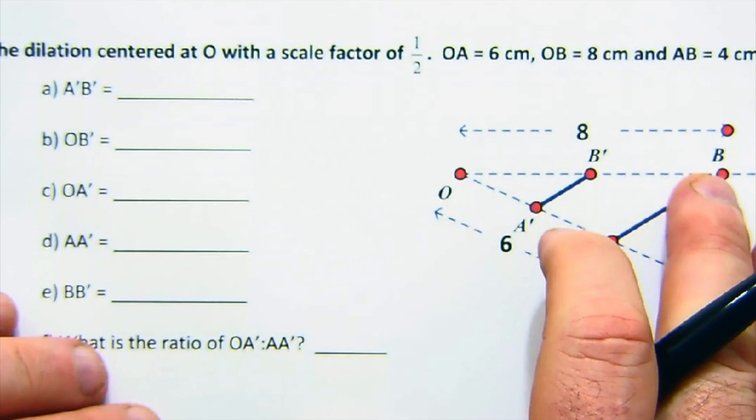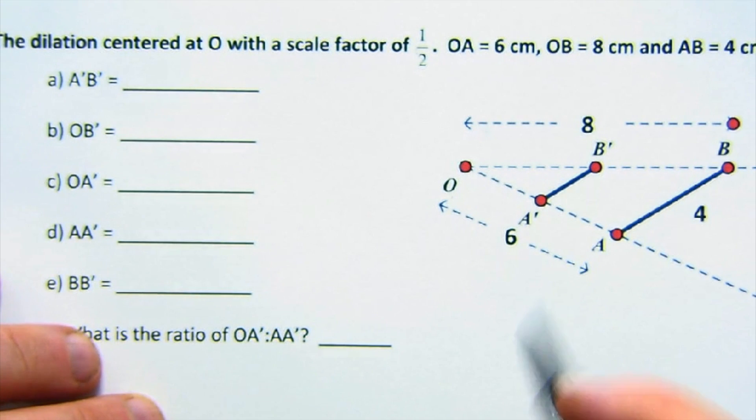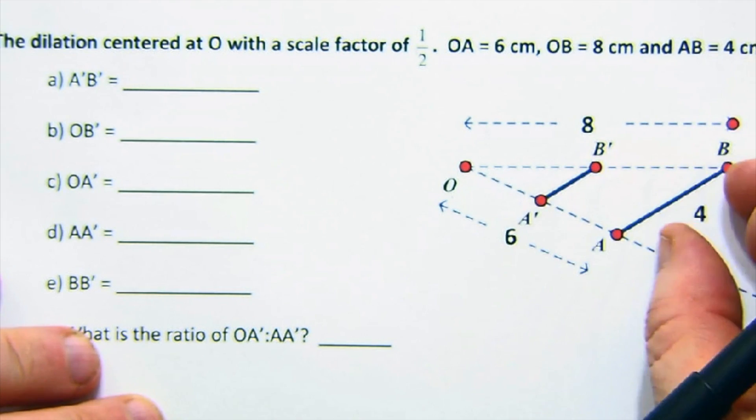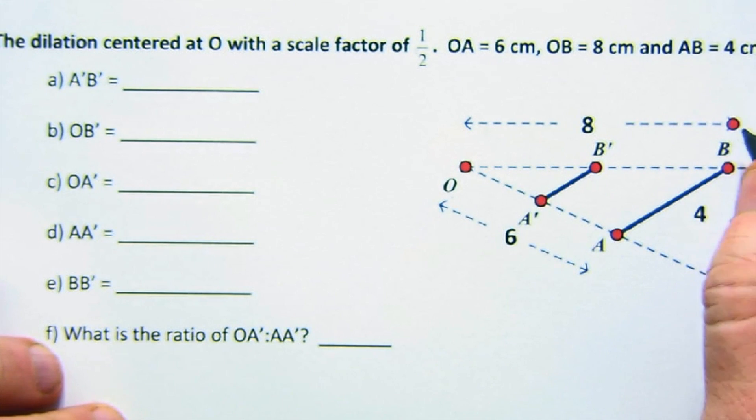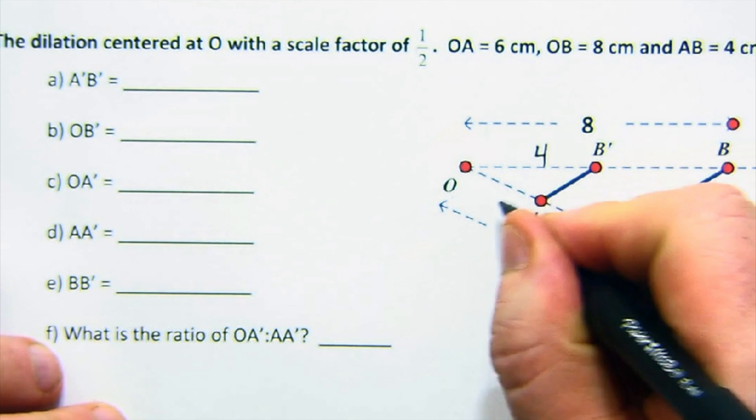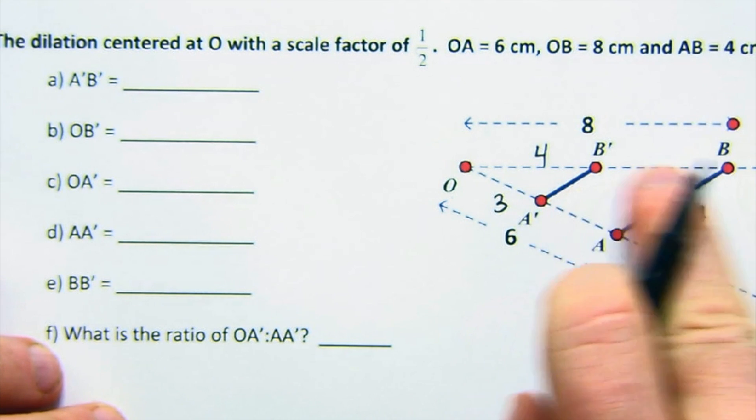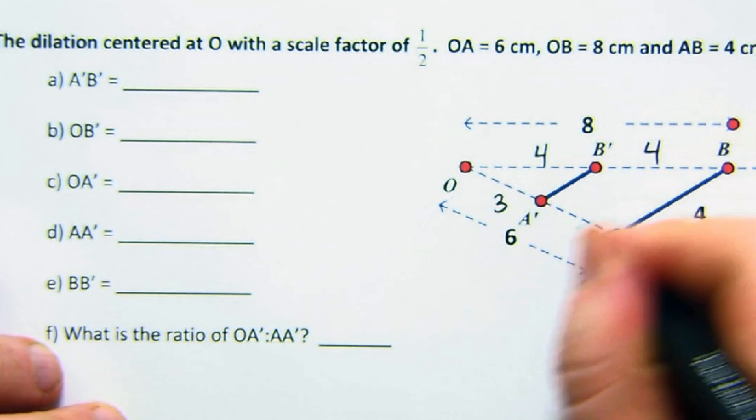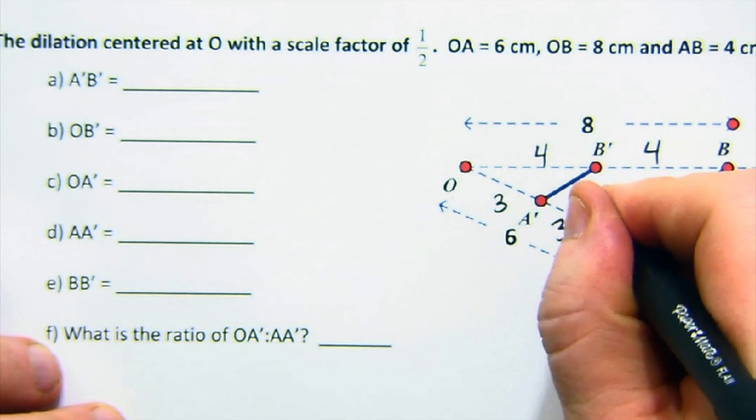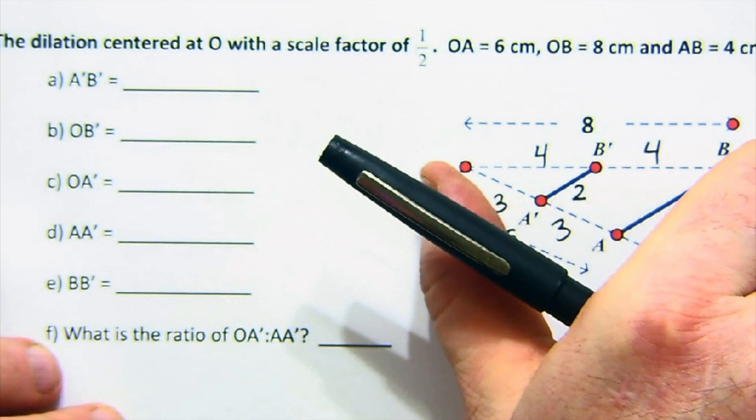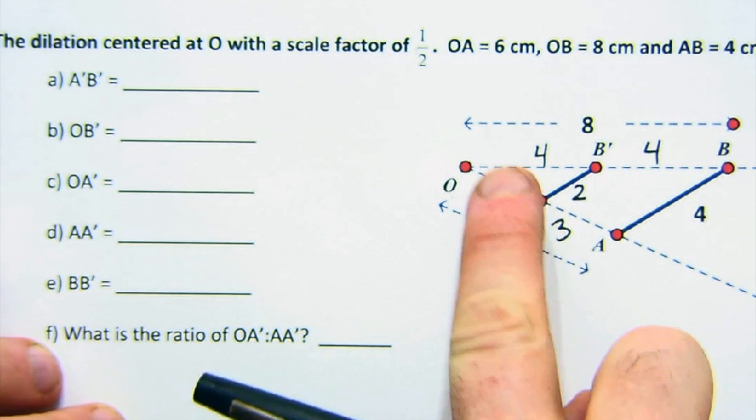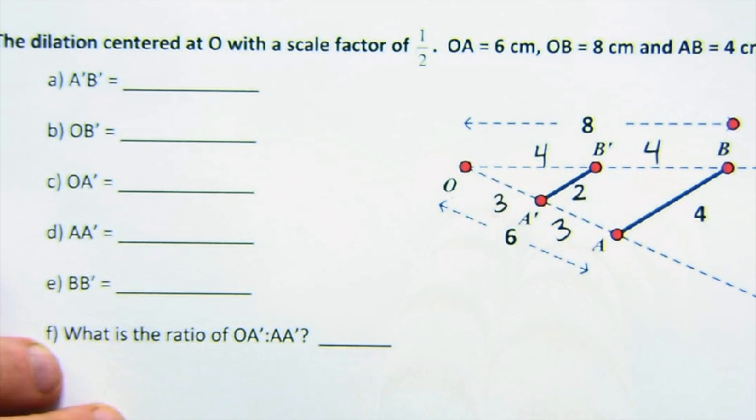And just to show you a similar kind of question, we won't do all of these. But notice how this is a reduction because the primes are closer to O. And it gives us the full distance, and it says everything dilates a half. So that would be four and three. And in this case, I would leave us four here, three here. Four and a half of that is two. And then we'll answer these kind of questions. Notice, again, this is a dilation of one-half, but the ratio of the pieces happens to be a one-to-one ratio. And you can fill in those so that you can figure this out. Thank you.